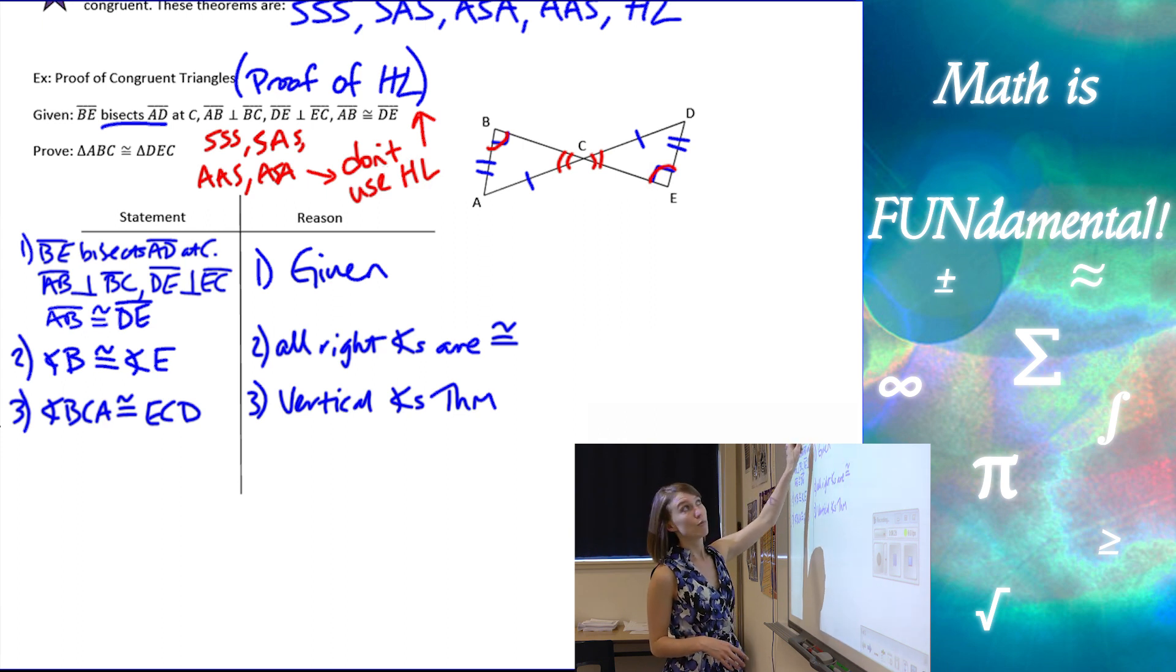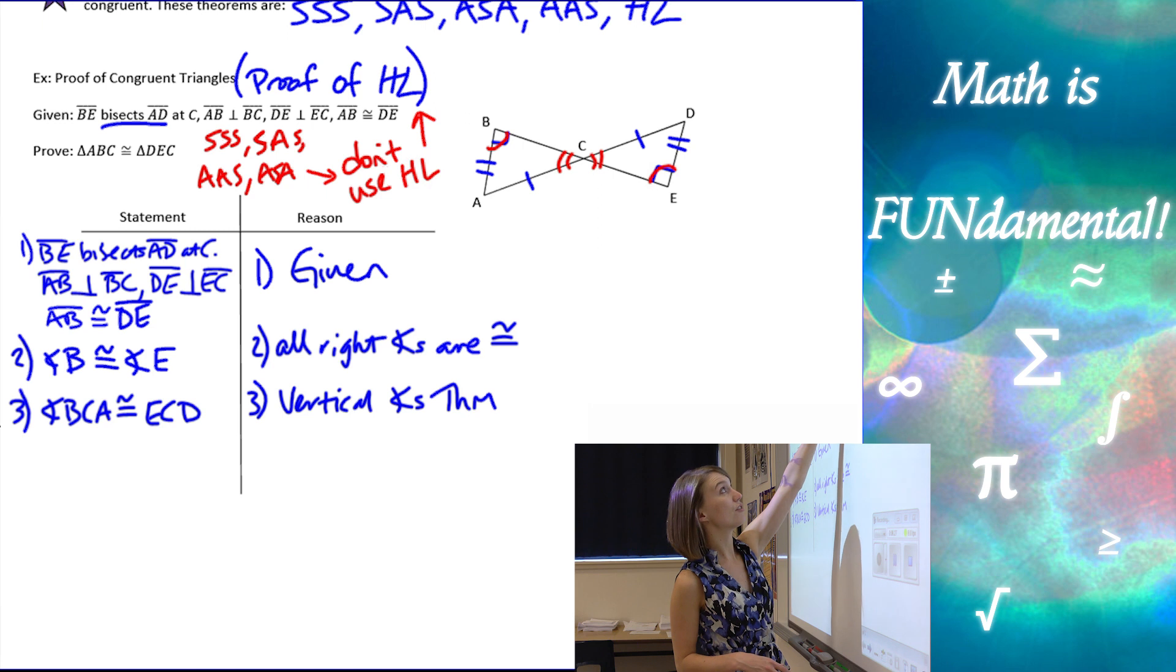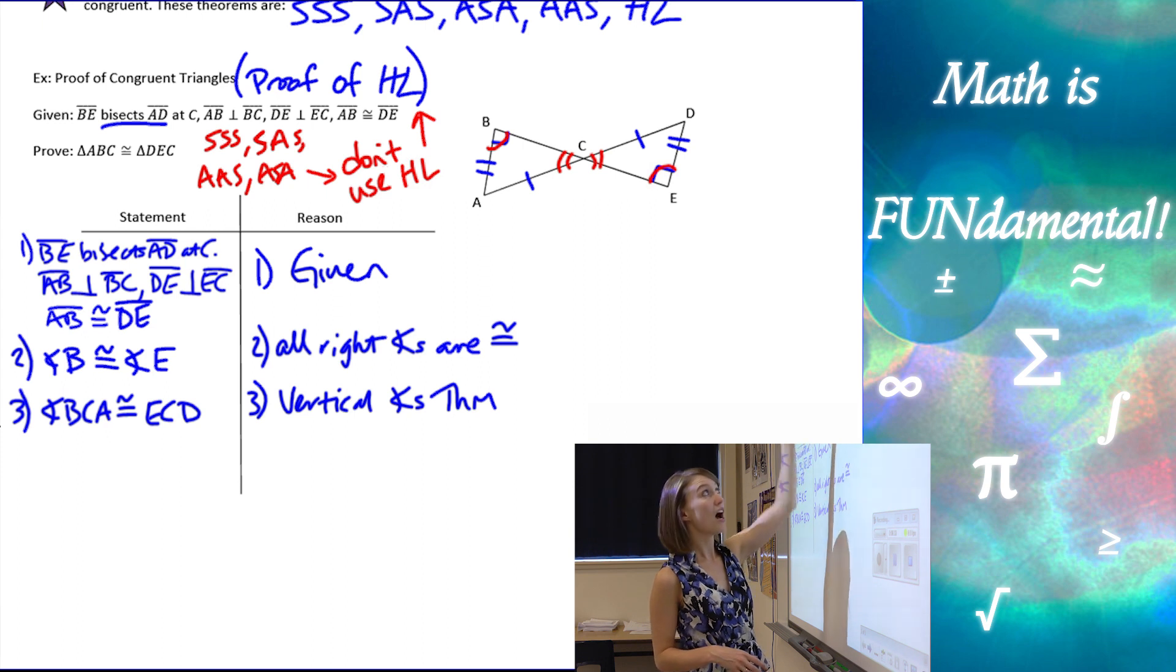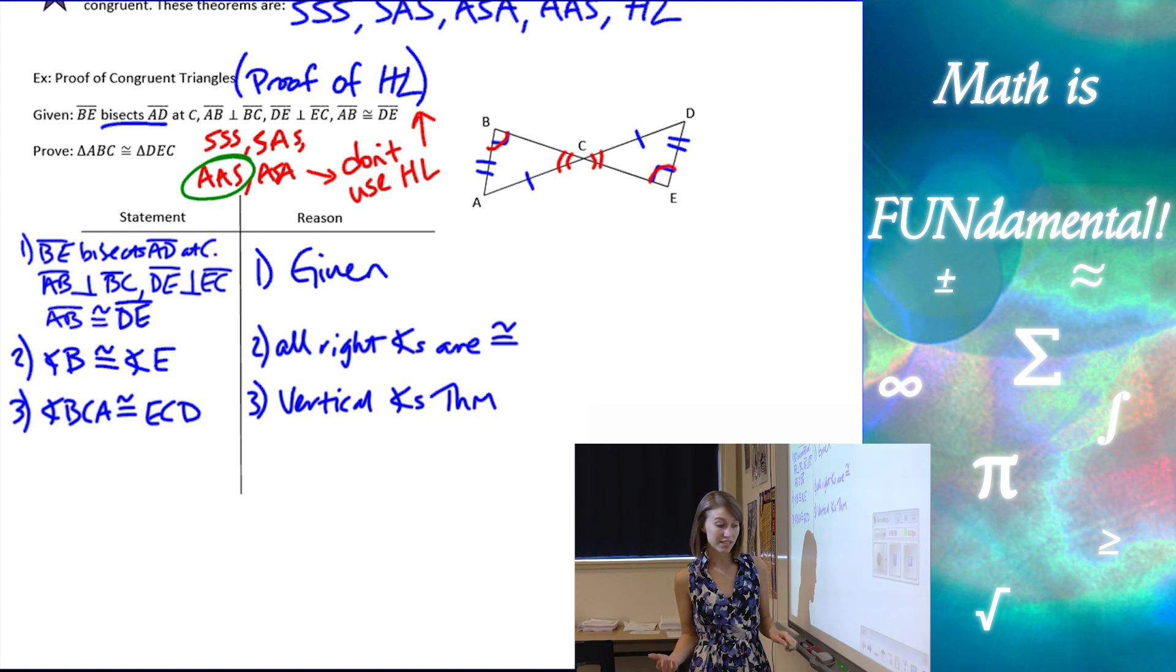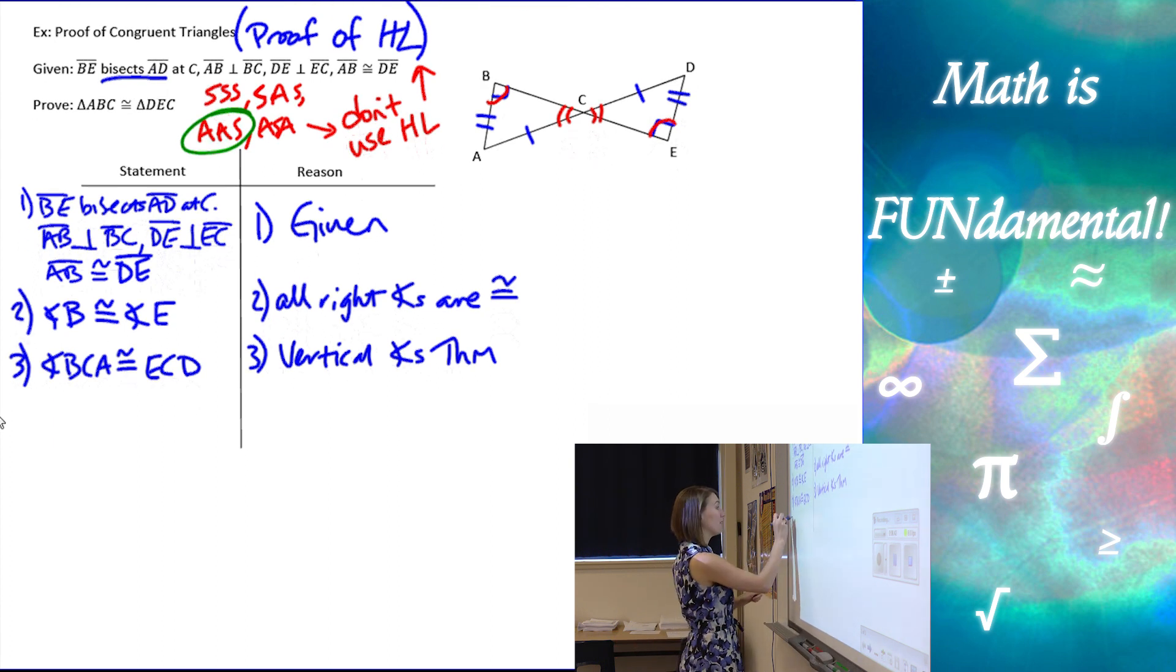How about angle angle side? Well, if I look at my two angles, I do have two sets of angles. I don't have the side in between them, but I don't need the side in between them. I have other sides. So it looks like we actually have enough information to stop at this point and use angle angle side.